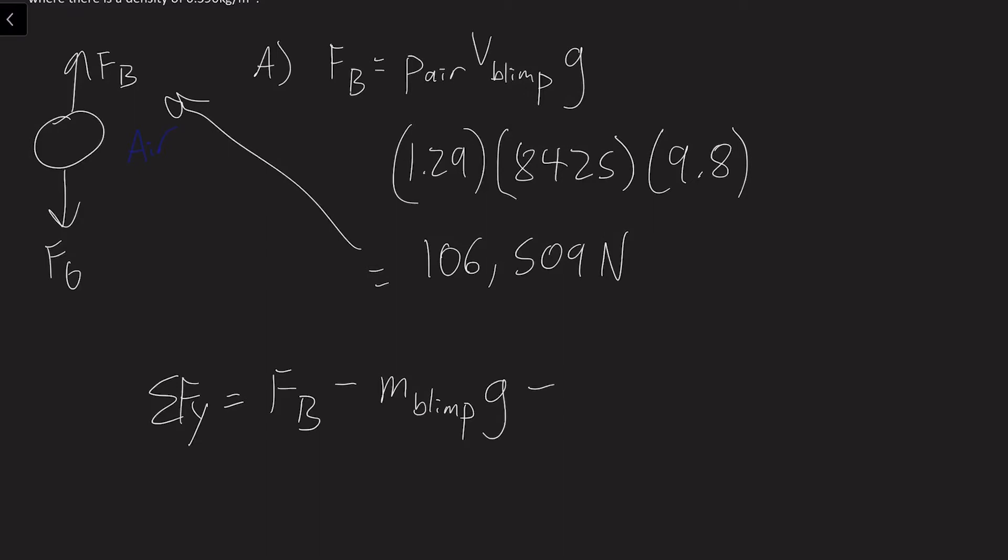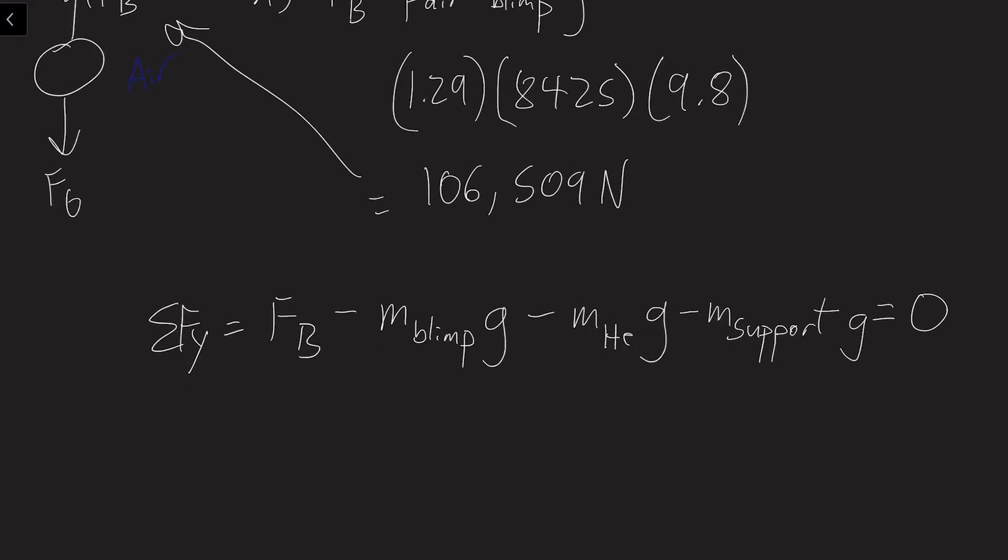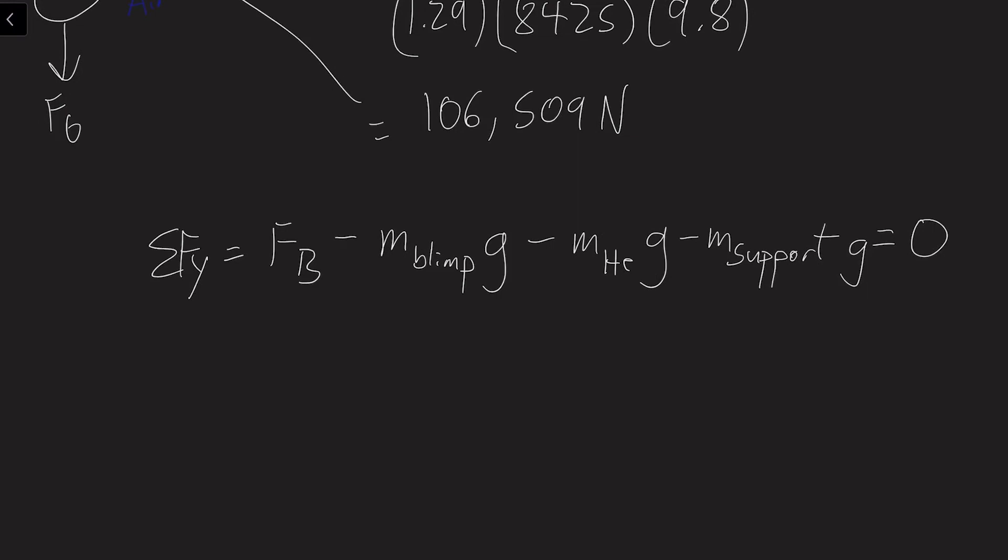And then we also have to subtract the mass of the helium times gravity. You don't want to forget that. And then we have the mass that it can support, which we're trying to find, times gravity. And this will equal 0, because we want to know the maximum mass, so it won't be rising, and it won't be sinking.